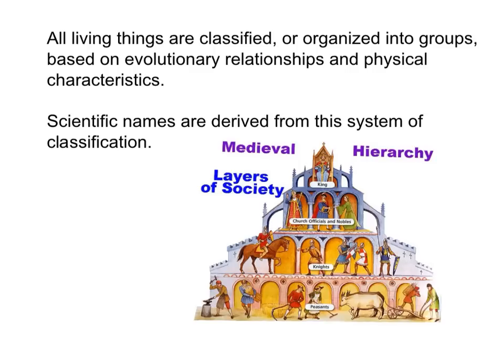As we talked about this week, all things are classified. All things around us in life are classified, and so it makes sense that all living things would also be classified. When I say classified, I mean organized into groups. Living things are going to be classified or organized based on evolutionary relationships and physical characteristics. We look back and see how things were related according to the theory of evolution and a common ancestor. Scientists also look at physical characteristics to see how things are different and how they're similar. Scientific names are going to be derived from this system of classification — we use the genus and the species specifically to make scientific names.